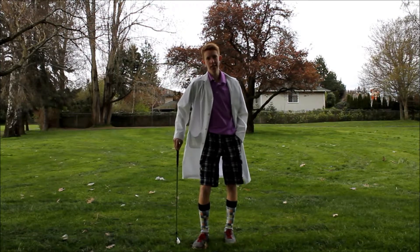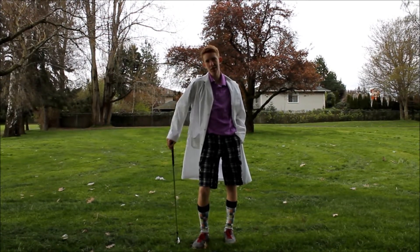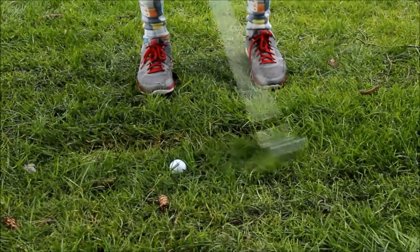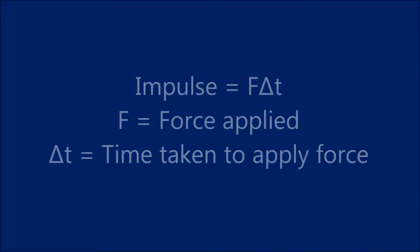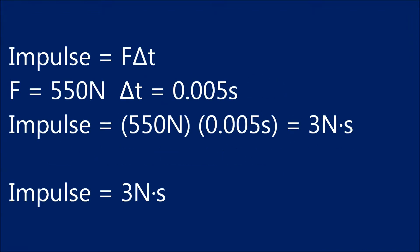Impulse is defined as the force exerted on a body at a specific time interval. If I hit this golf ball with a force of 550 newtons, where the golf ball and the golf club come into contact with one five thousandths of a second, we can then calculate the impulse. Impulse equals F delta T, where F equals the force applied and delta T equals the amount of time it took to apply the force. By plugging the numbers previously stated into the impulse formula, we can solve for the impulse on the golf ball, which happens to be three newton seconds.